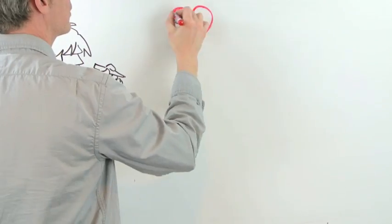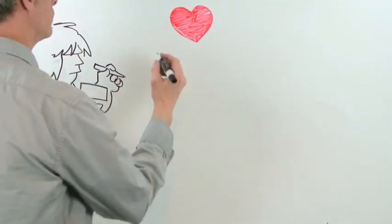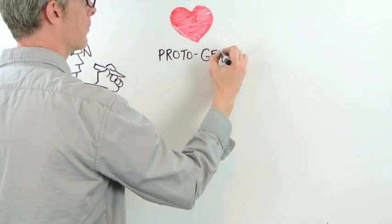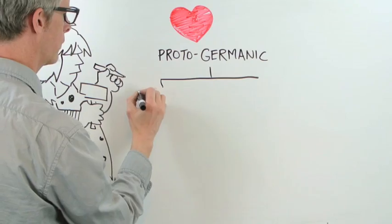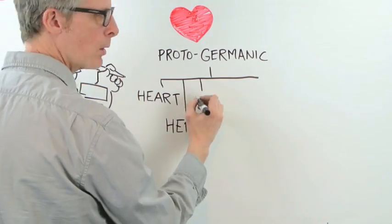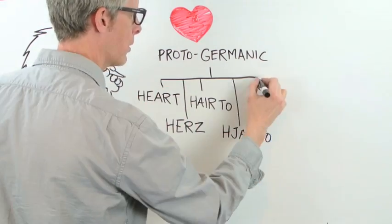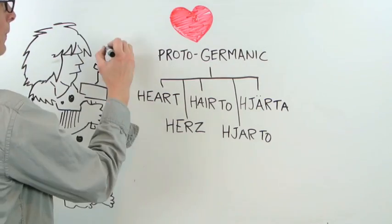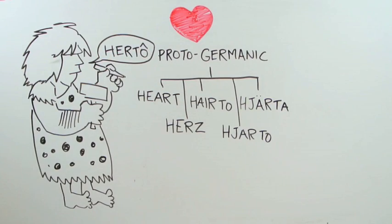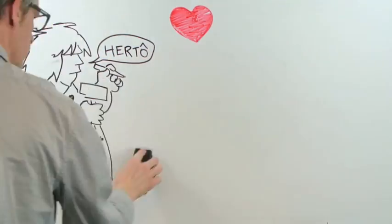They are siblings or cousins. They belong to a whole family of descendants, including Dutch, Swedish, Icelandic, and Gothic. By studying the sound correspondences across these languages and applying consistent sound change rules, we can actually work out what this mystery ancestor, Proto-Germanic, looked like.